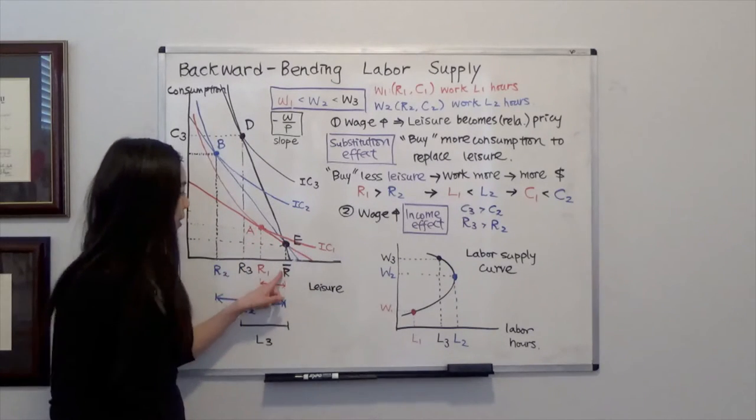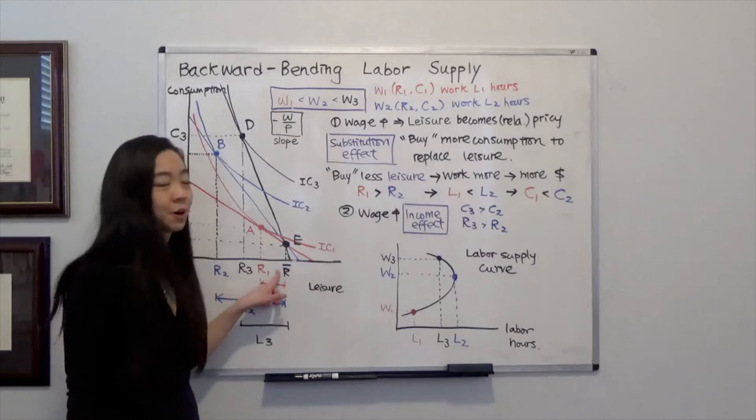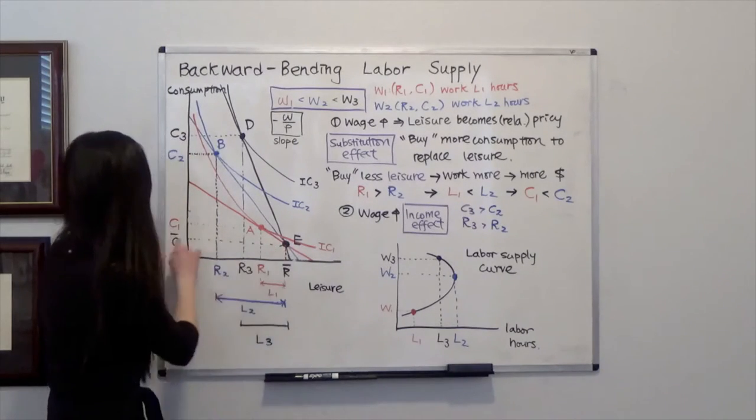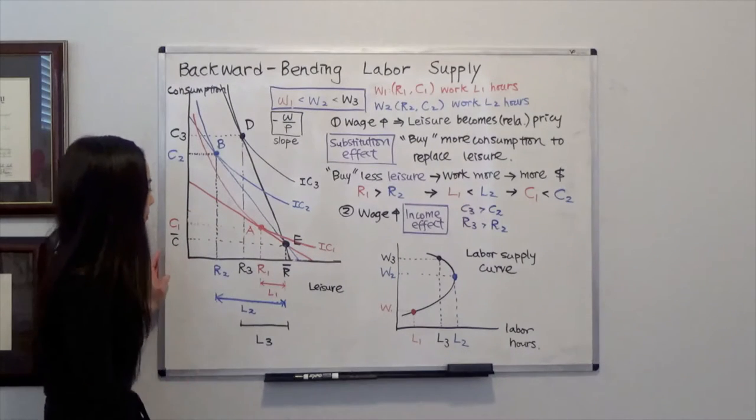And you can sketch your budget line that goes through your initial endowment, where, remember, you have R bar hours to spend, so 16 hours, and your endowment consumption is C bar.